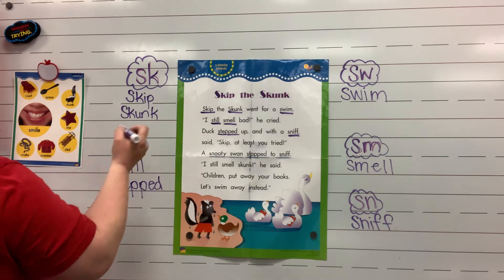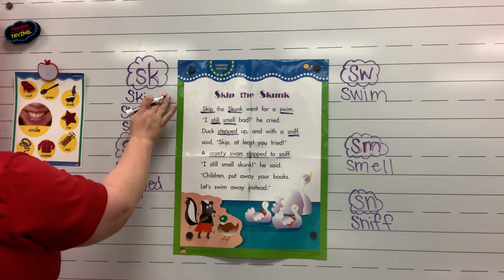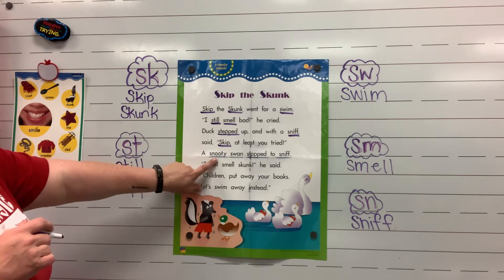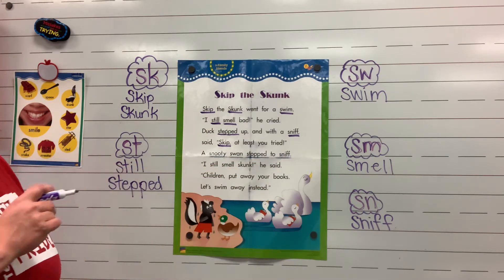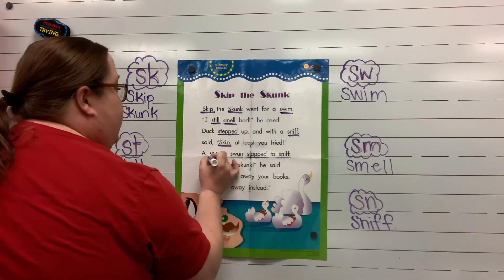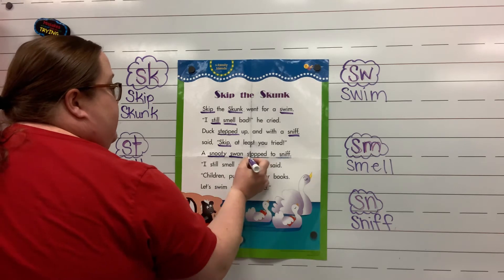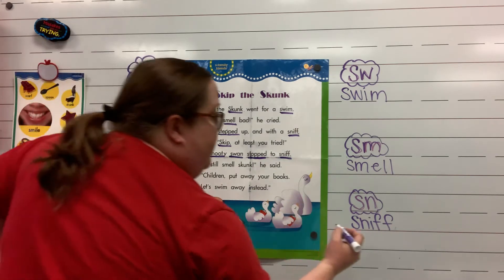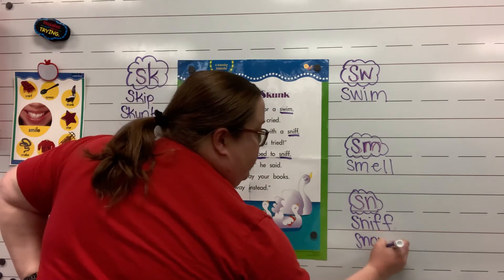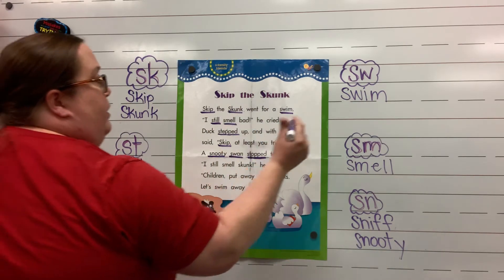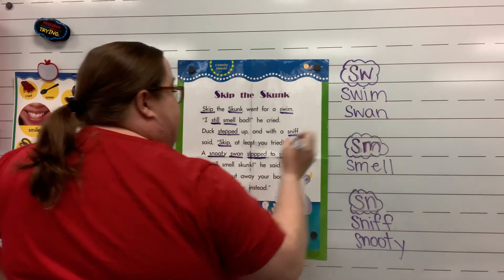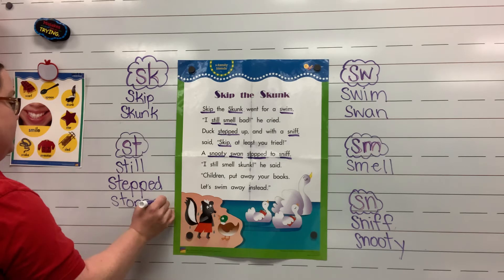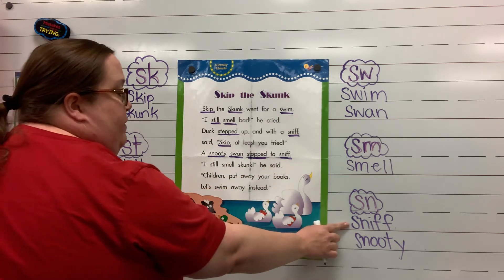S-K for skip — but we already have skip on our list, so I'll just underline it. A snooty swan stopped to sniff. Wow, there's a lot of S blends there! Snooty is S-N, swan is S-W, stopped is S-T. To sniff is S-N, which we already have, so I won't write it again.